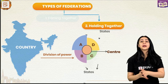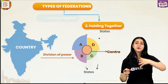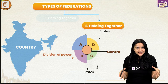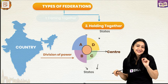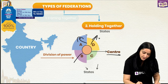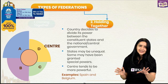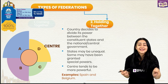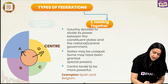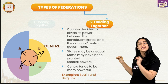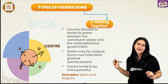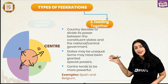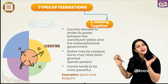Let's move ahead and talk about the second type — the holding together federation. Unlike the coming together federation where states decided to form a union, here it is actually different. It's a large country that already exists that decides to divide its power between the center and the constituent states. The power is divided from the center outward. In this kind of federation, the central government tends to be more powerful than the states, and the constituent states might have unequal powers — some may have more, some may have less.